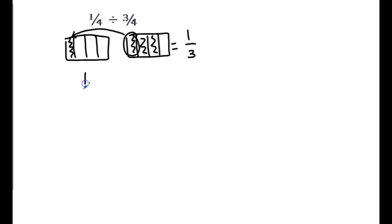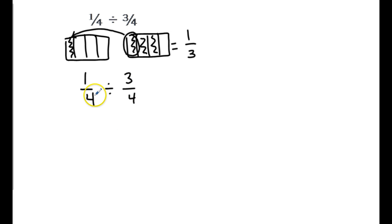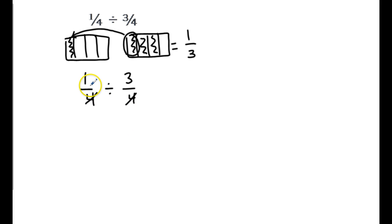Let's take a look at this algebraically: one-fourth divided by three-fourths. We have common units so they disappear, and it just becomes a division of our numerators. One divided by three gives us one-third — same answer.